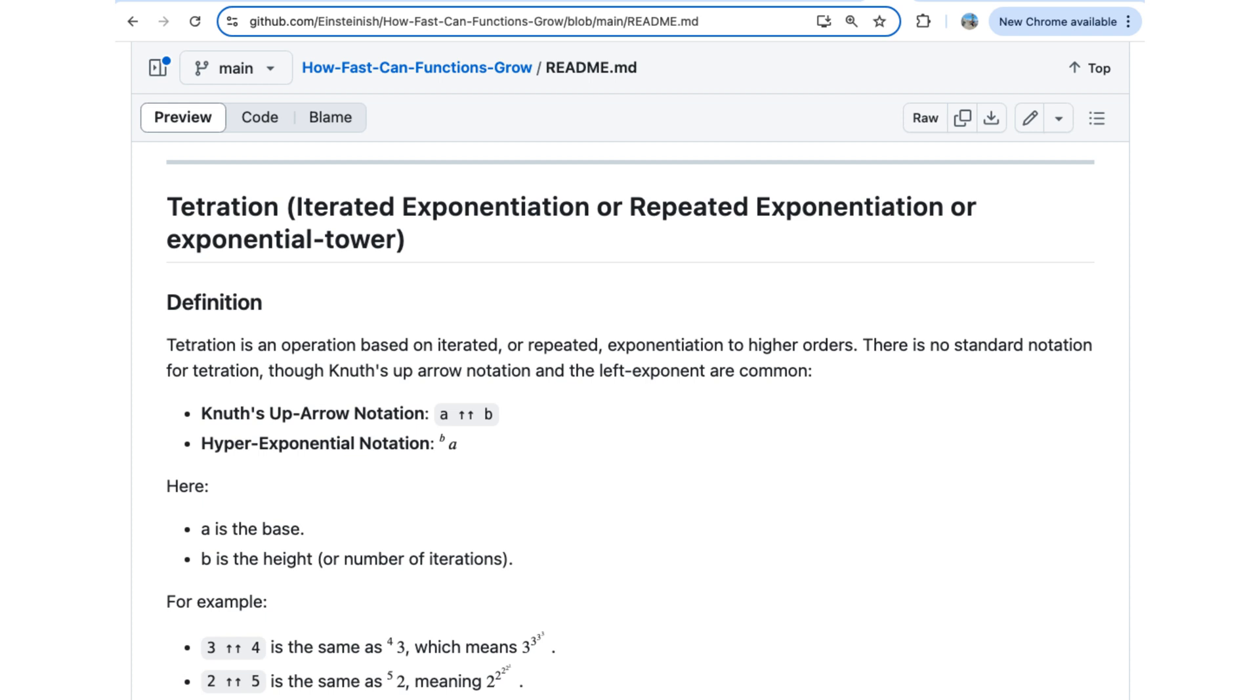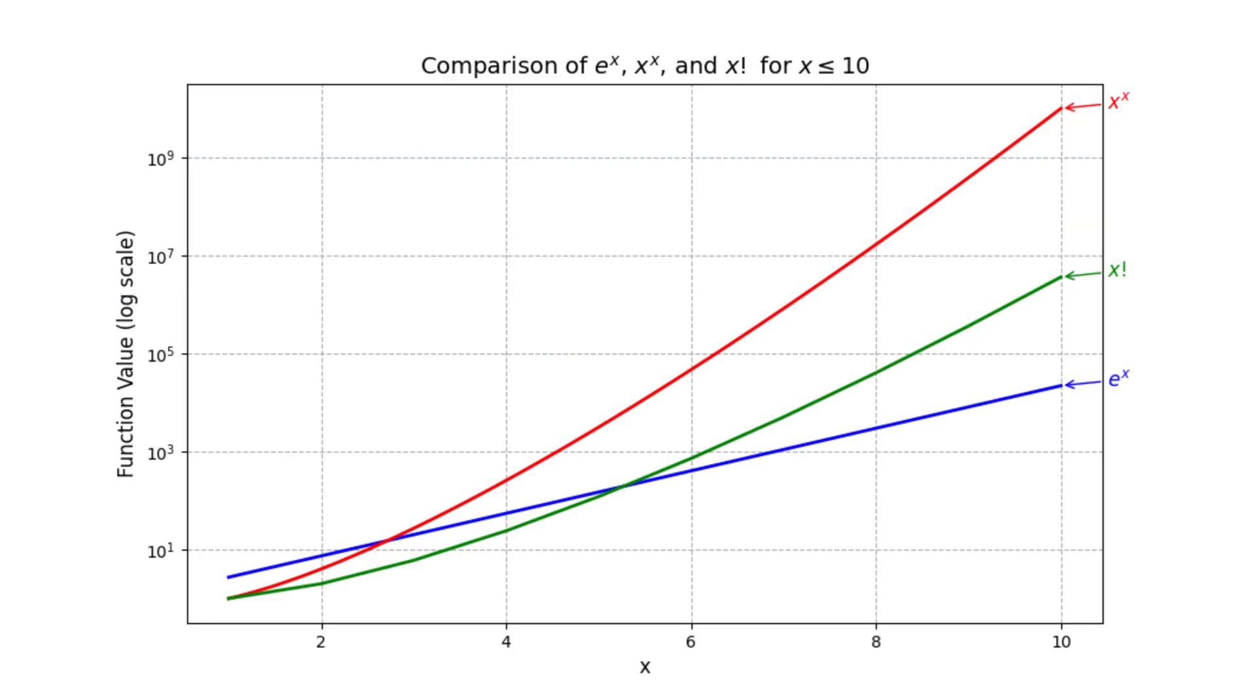Knuth's up arrow notation and the left exponent are common. Here, a is the base, b is the height. Height means the number of iterations. As you can see from this graph, the tetration function of height 2 grows faster than the other two functions.